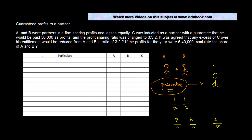The actual share of the partners out of six hundred and forty thousand: each unit is eighty thousand (640,000 divided by 8). So A's share is 3/8 of 640,000, which is two hundred and forty thousand. B's share is also two hundred and forty thousand. C's share is 2/8, which is one hundred and sixty thousand.